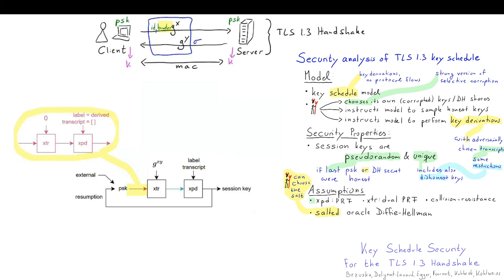For the PRF assumptions and the collision resistance we did not need to make agile assumptions that talk about relations between different algorithms. But for the salted oracle Diffie-Hellman we did need to make an agile assumption because potentially from the same Diffie-Hellman secret one might extract with pre-shared keys that use different algorithms.